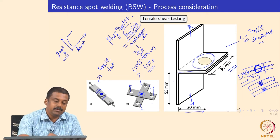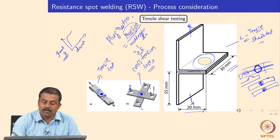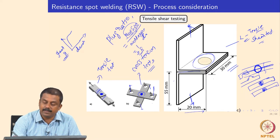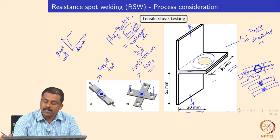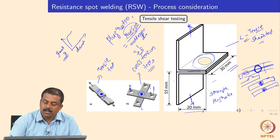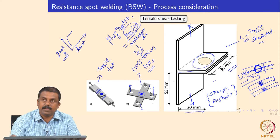By combining the shear load required to cause failure and the plug ratio, we get acceptable welding characteristics. This L-configuration tensile shear test is very simple to carry out and is preferred in various industries. We identify both the load required to pull the two plates apart after spot welding and the plug ratio — combined, they give the mechanical properties of the welds made in the sheets.